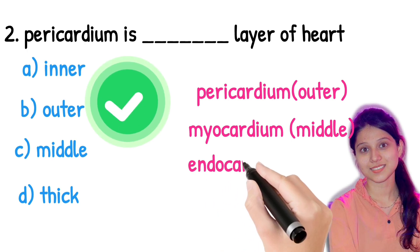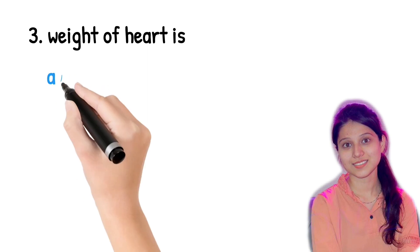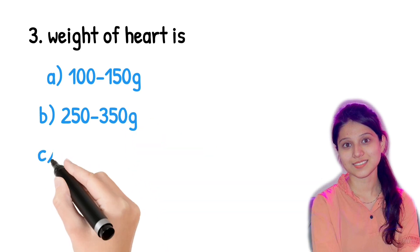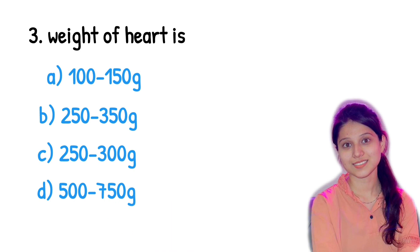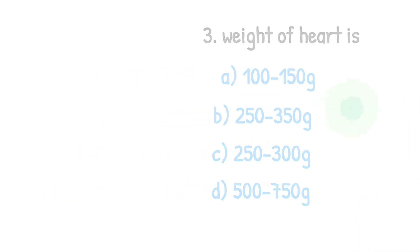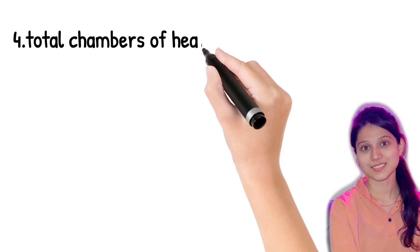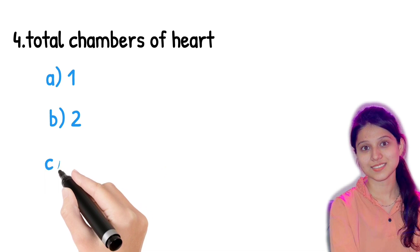The next question is the weight of the heart. Options are: 100 to 150 grams, 250 to 350 grams, 250 to 300 grams, or 500 to 750 grams. This is easy — the weight of the heart is 250 to 350 grams.